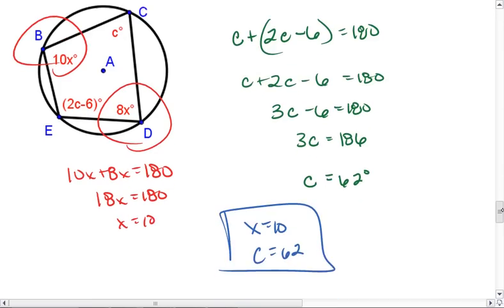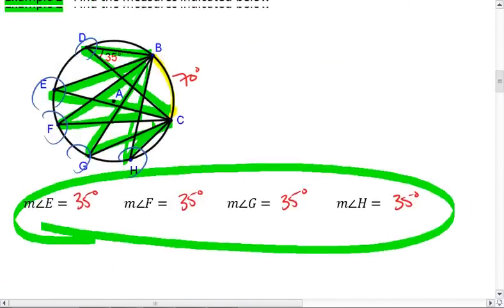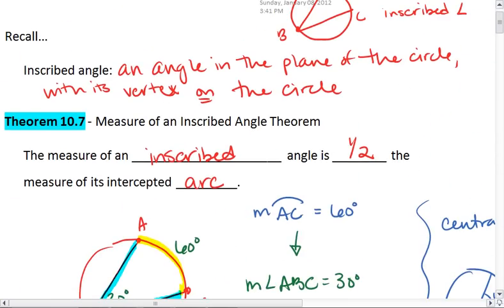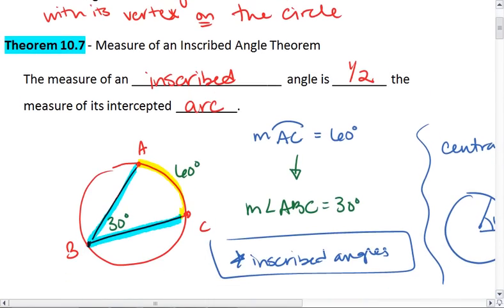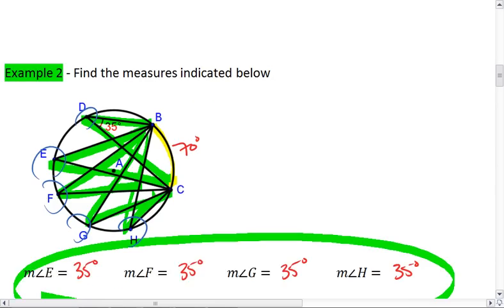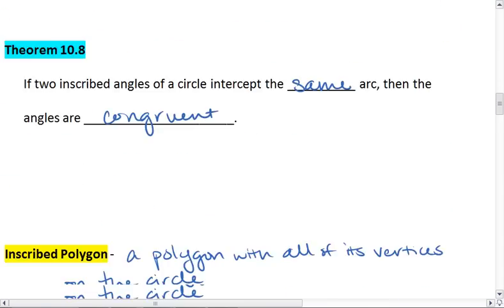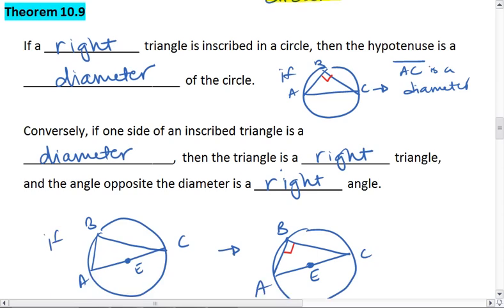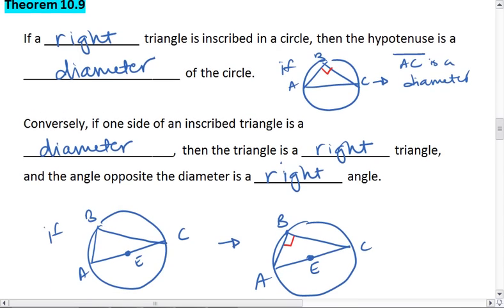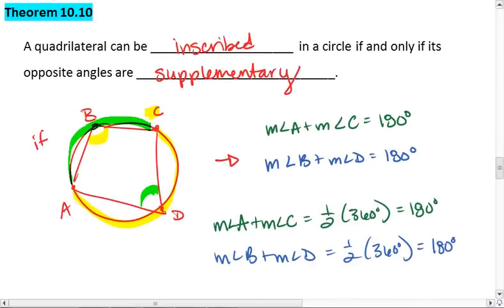And that does it for our video notes. If you have any questions, go back and review the topics. Make sure you know the relationship between an inscribed angle and its intercepted arc - the inscribed angle is half of the intercepted arc. Recognize that if angles intercept the same arc, they must be congruent. The triangle is a right triangle if and only if its hypotenuse is the diameter. And inscribed quadrilaterals have opposite angles supplementary.